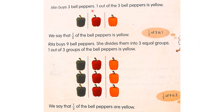Min buys three bell papers. One out of the three bell papers is yellow. We say that one over three of the bell papers is yellow. One over three of three is one.